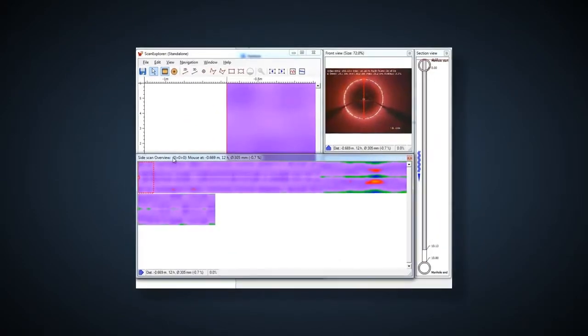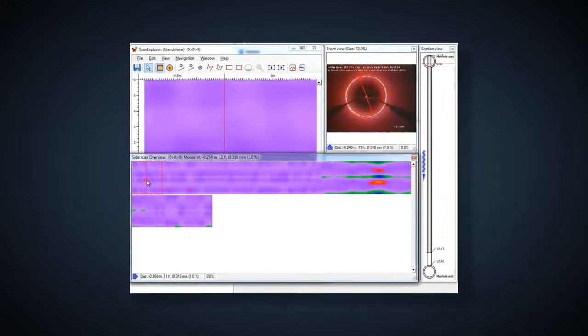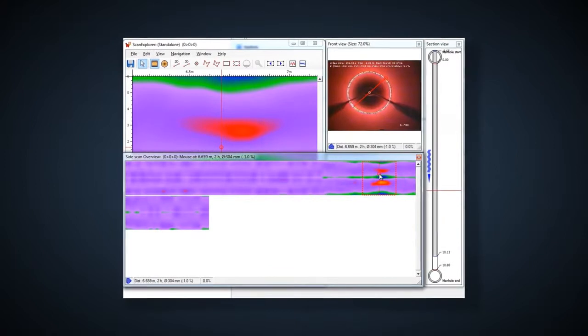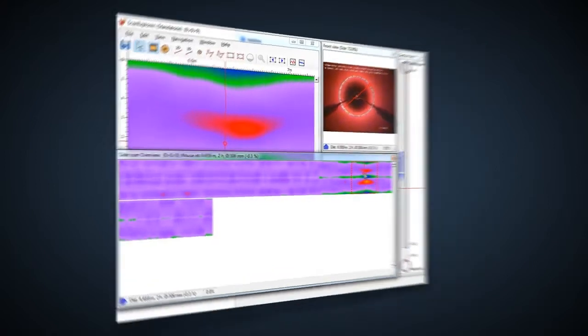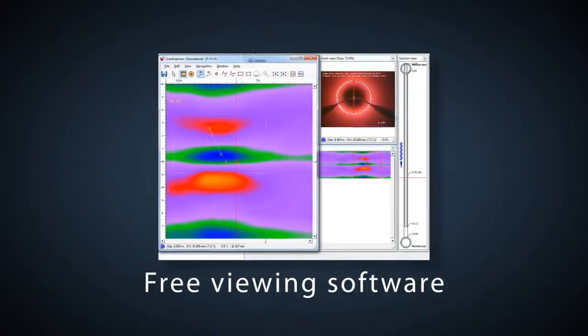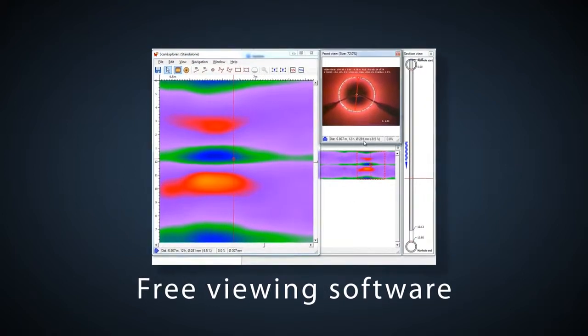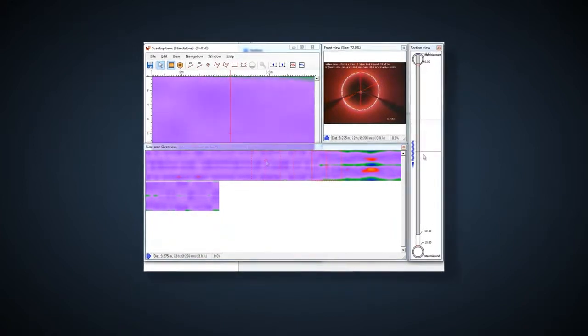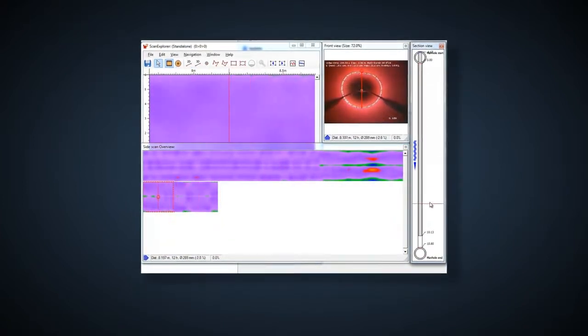A measurement interface where any point along the pipe can be selected to view local deformation, diameter, and ovality data. And free viewing software, which can be packaged with raw scan data in order for third parties to have access to LaserScan's full suite of analysis tools.